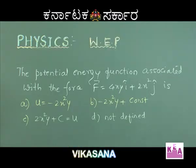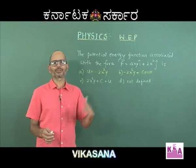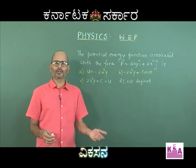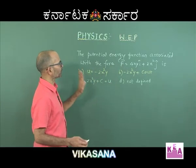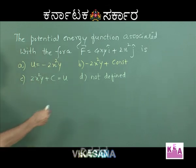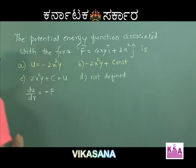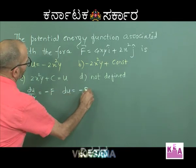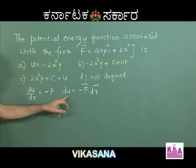There is a beautiful problem associated with conservative force and potential energy. Remember, F = -dU/dr is the relationship between conservative force and the negative of the potential gradient. If you are given one, you can always find the other. Here, the potential energy function associated with a given force is to be found — so he has given the force and wants the expression for potential energy. F = -dU/dr, so dU = -F·dr.